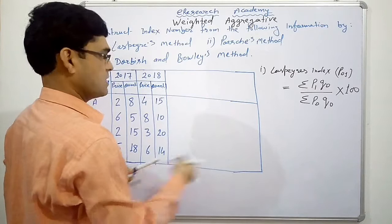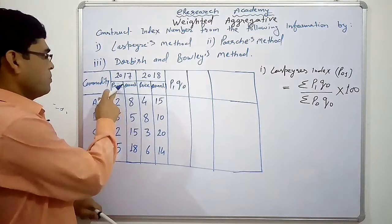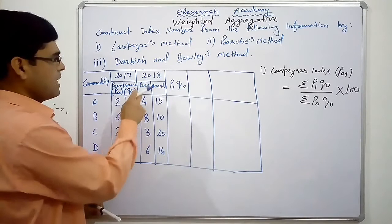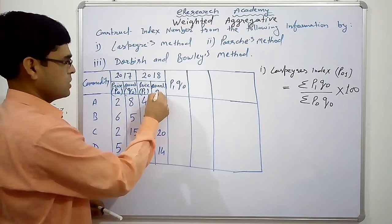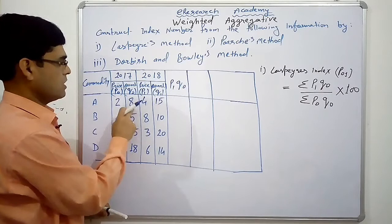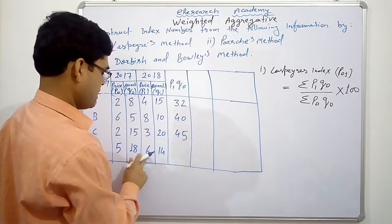So first, this is P1 Q0. The price of base year means 2017. This is P0, and quantity for the base year that is Q0. Similarly price for current year is P1 and quantity for current year is Q1. So P1 Q0 will be P1 we have this value and Q0 we have this value. So this into this 8 into 4 that is 32, 5 into 8, 40, 15 into 3, 45, 18 into 6 that is 108.